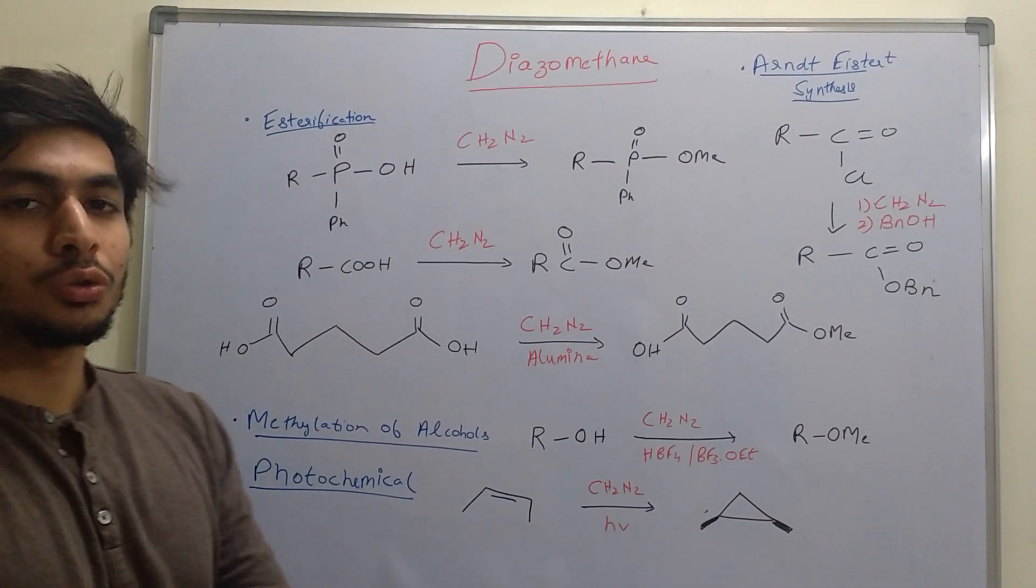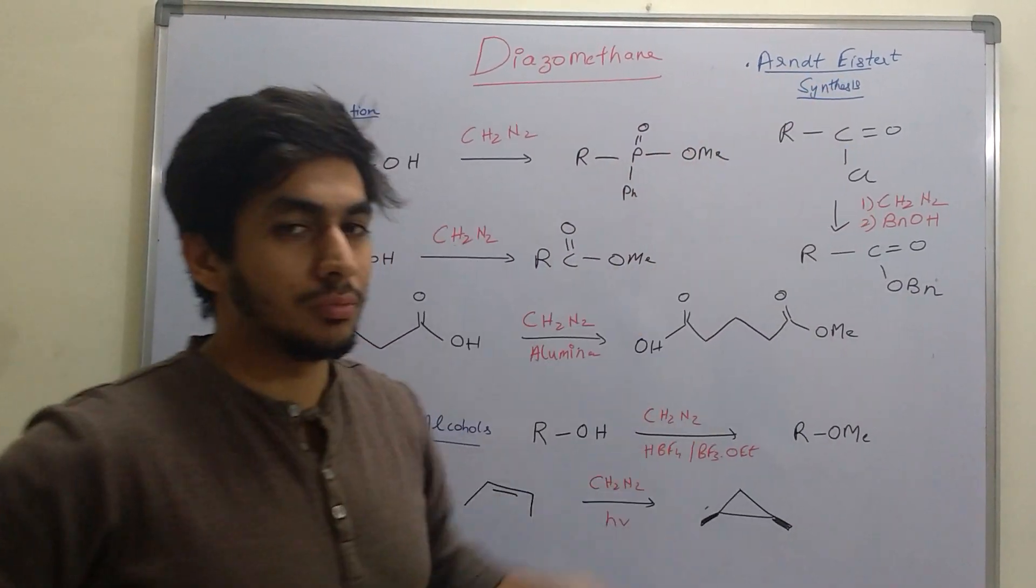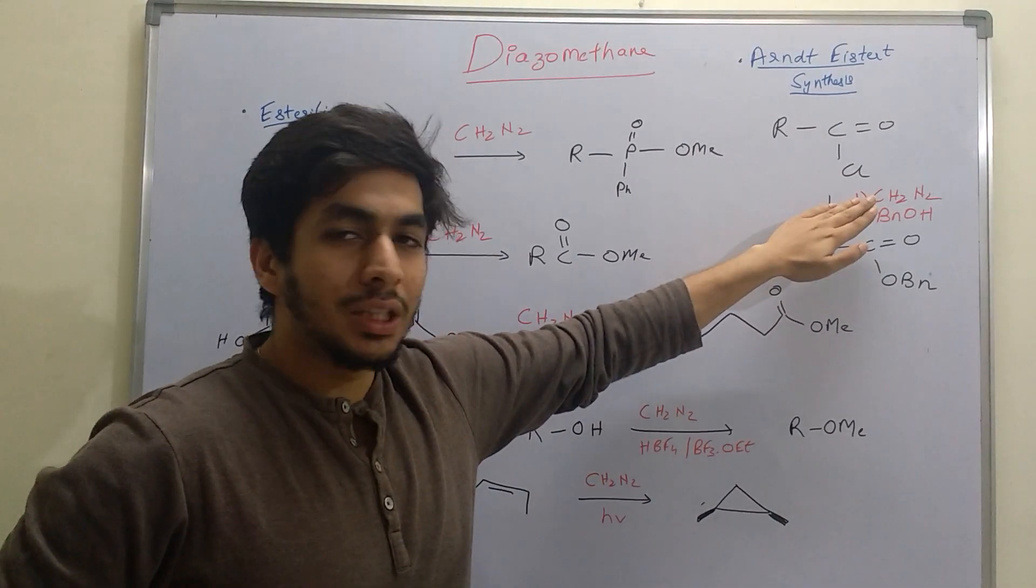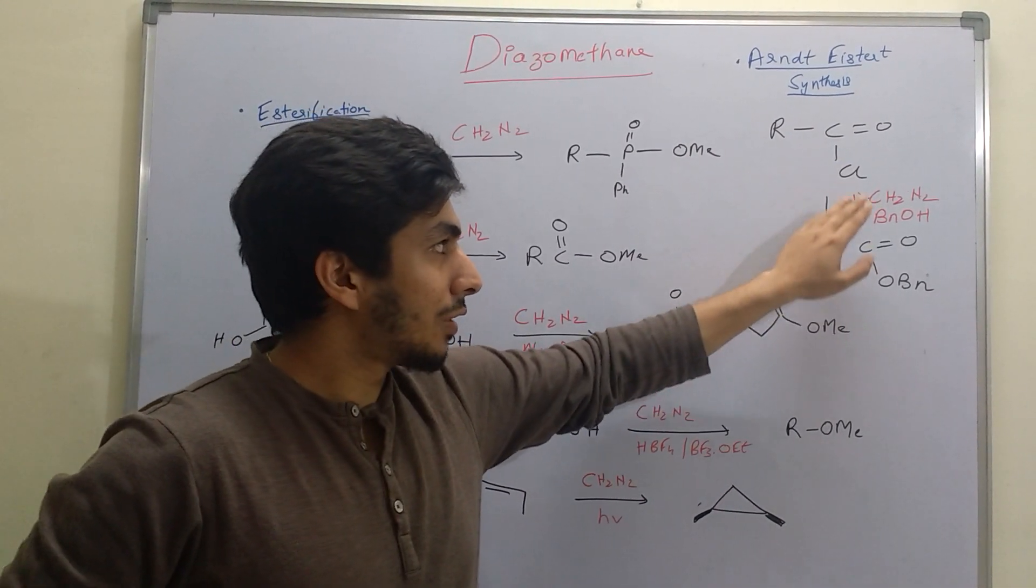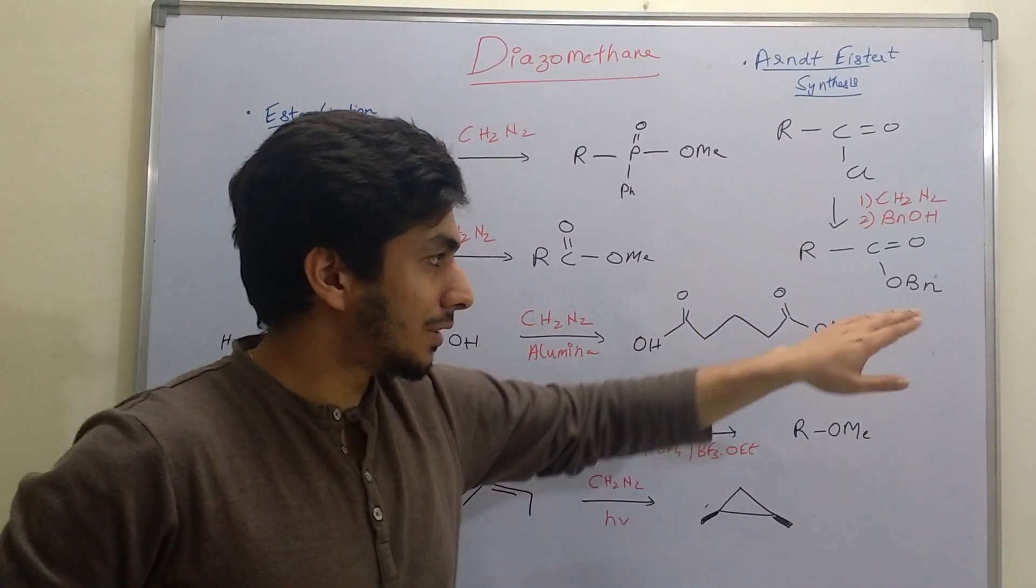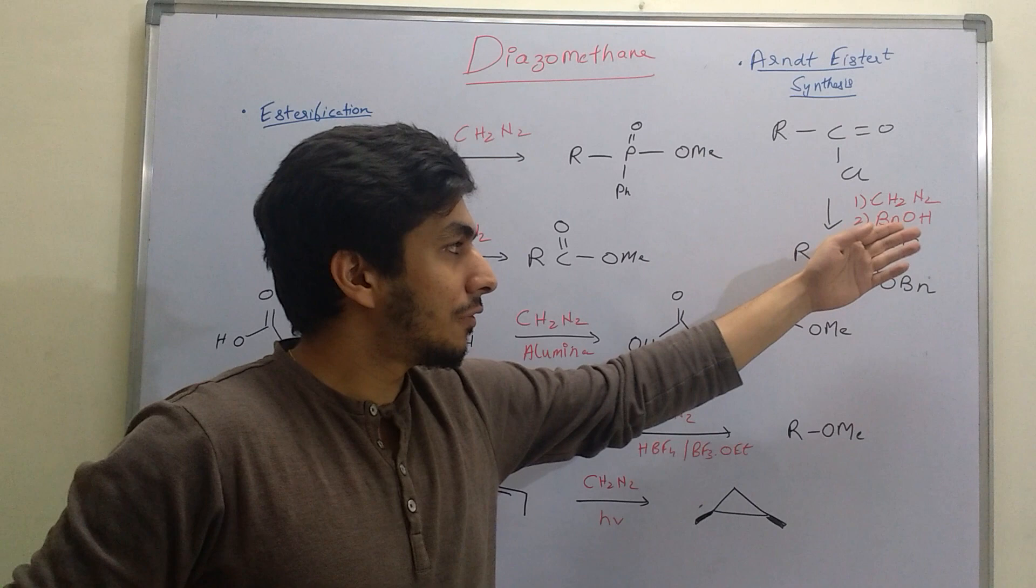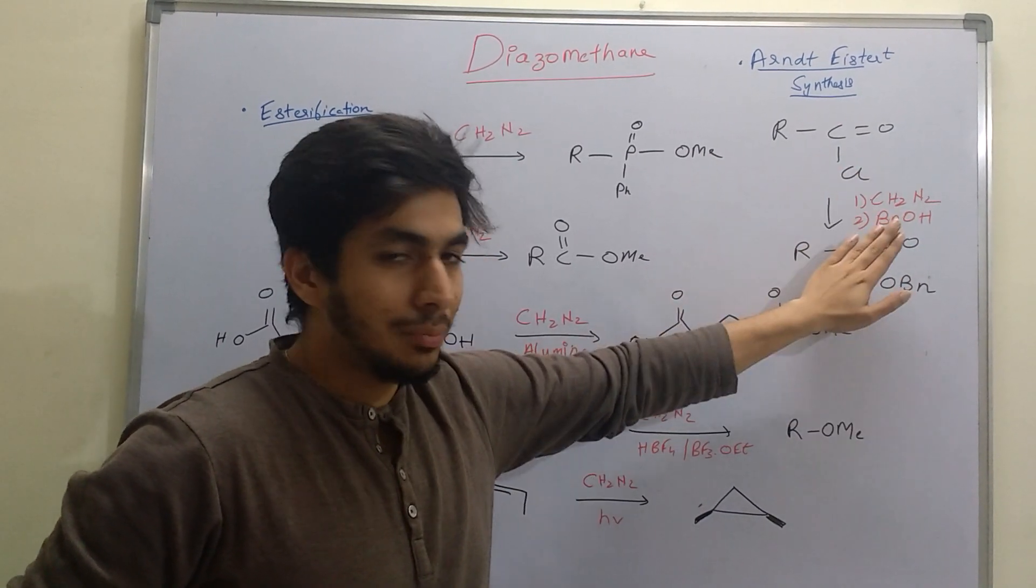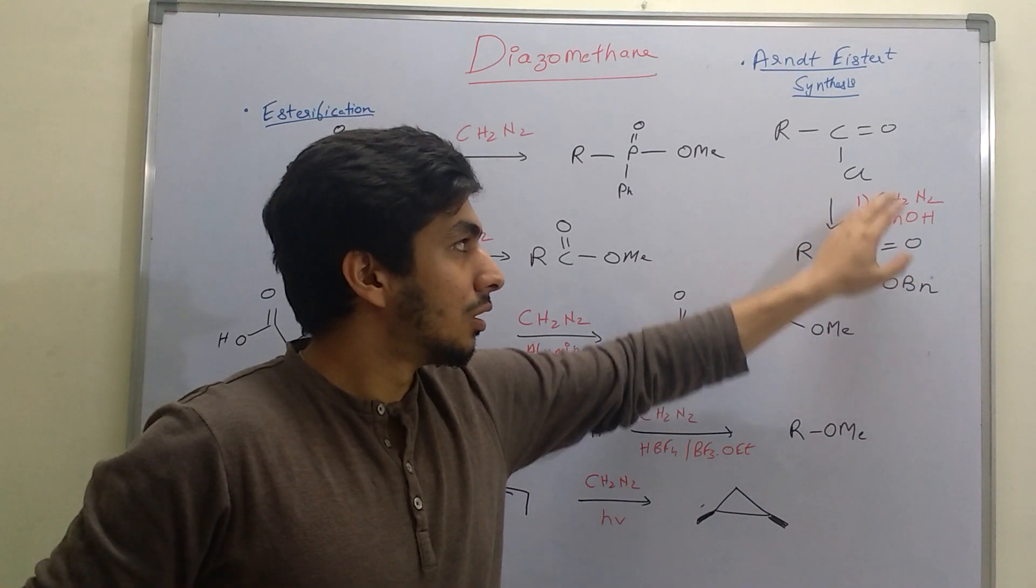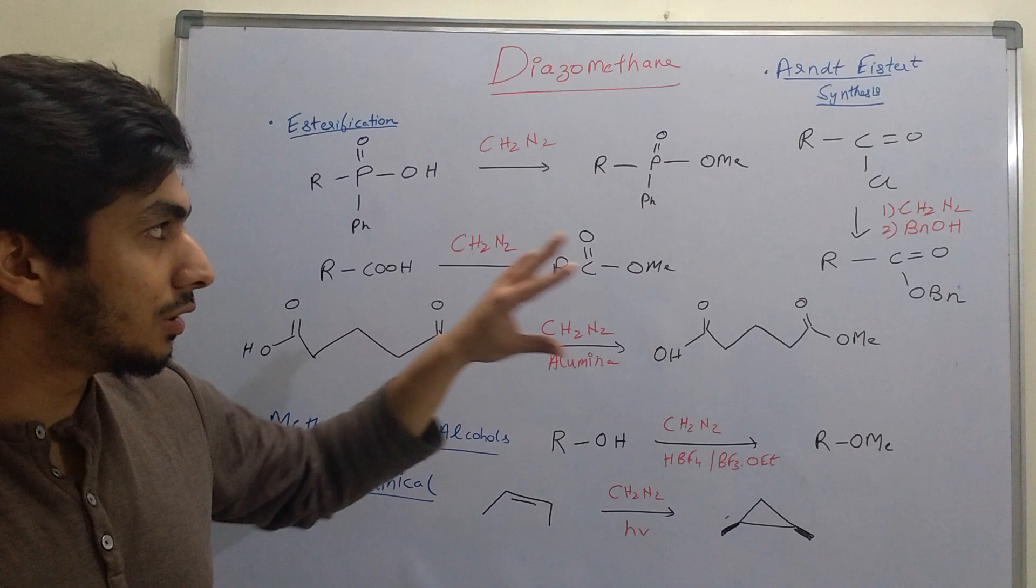Diazomethane is also used in one popular name reaction, the Arndt-Eistert synthesis. If you have acid chloride on addition of diazomethane followed by addition of alcohol, the chloride is replaced by the alcohol. For example, here with benzyl alcohol, the benzyl group O-benzyl group replaces the chlorine. Similarly, if you add methanol, we get OME. You replace the chloride with the alcohol.